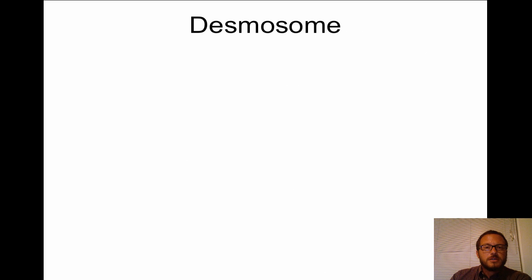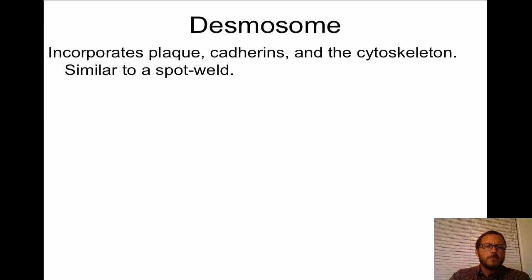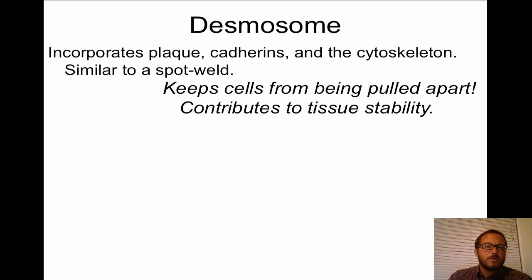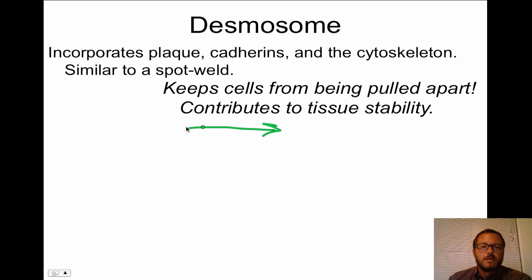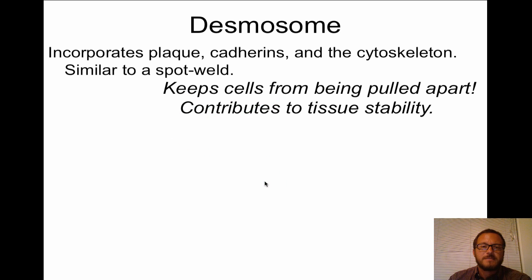The next type of junction is called a desmosome. A desmosome incorporates plaque, cadherins, and the cytoskeleton — the cell's own support network is invested in this junction. If you pull hard enough, the desmosome doesn't break; the actual cell can start to break apart. These are conical spot welds that keep cells from being pulled apart.